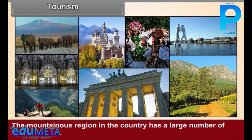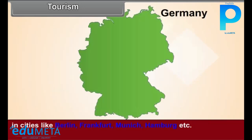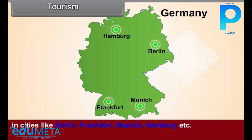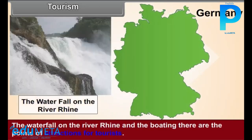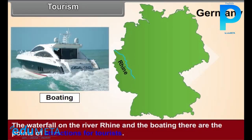Tourism. The mountainous region in the country has a large number of tourist places. One can see a number of places of historical importance in cities like Berlin, Frankfurt, Munich, Hamburg, etc. The waterfall on the river Rhine and the boating there are the points of attraction for tourists.